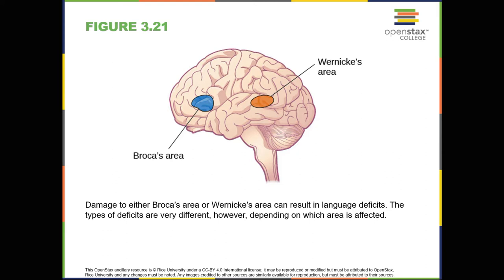The occipital lobe is located at the very back of the brain and contains the primary visual cortex, which is responsible for interpreting incoming visual information. The occipital cortex is organized retinotopically, which means that there is a close relationship between the position of an object in a person's visual field and the position of that object's representation on the cortex. You'll learn much more about how visual information is processed in the occipital lobe when you study sensation and perception.